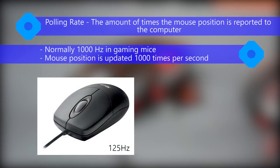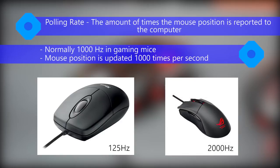With a rate of 1000 Hertz, the mouse's position is being updated 1000 times per second. The ASUS ROG Gladius notably has a polling rate of 2000 Hertz, although it would be very hard to tell the difference unless you are a real pro.